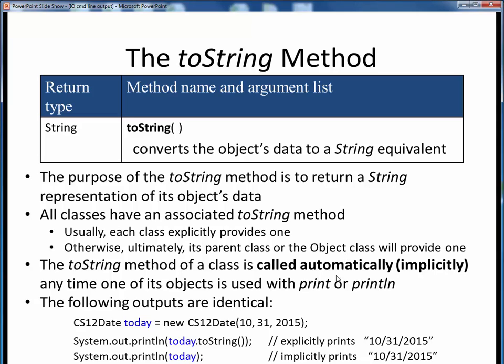Whenever we try to print any object using the system.out.print or println methods, Java will automatically or implicitly call that object's toString method. So in this example at the bottom, the following print outputs are identical. If we instantiate a new CS12Date object today as shown, either of these print statements will give the same result, using object.toString explicitly or just the name of the object implicitly. So in most cases, it's just as simple as to print out an object using its name only, and this is why it works.